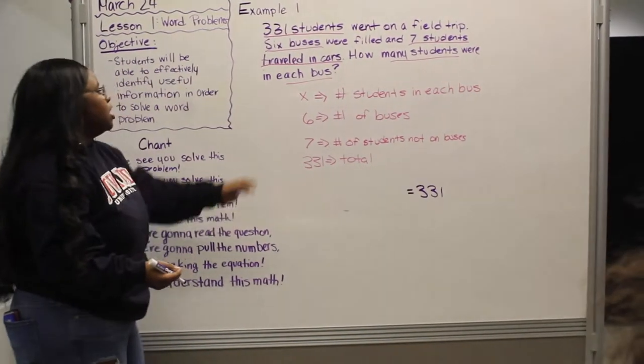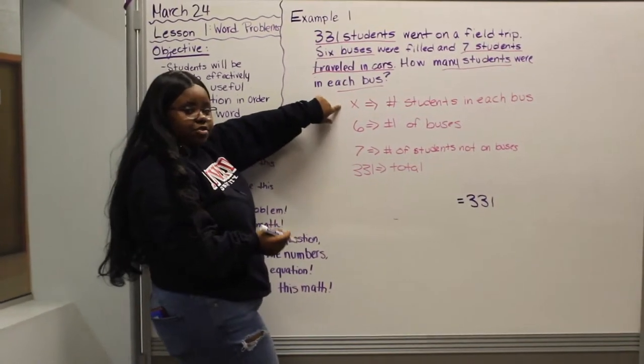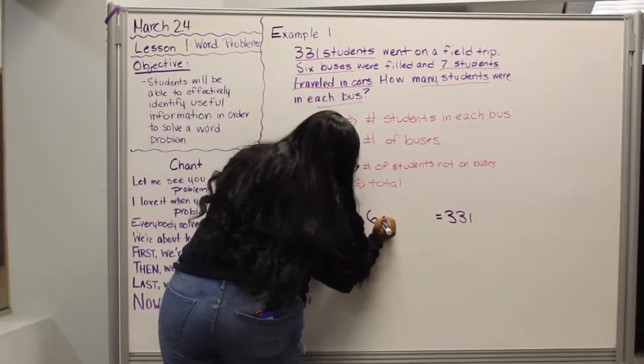Okay. And since there are six buses and we're finding x, the number of students on each bus, we're going to have 6x.